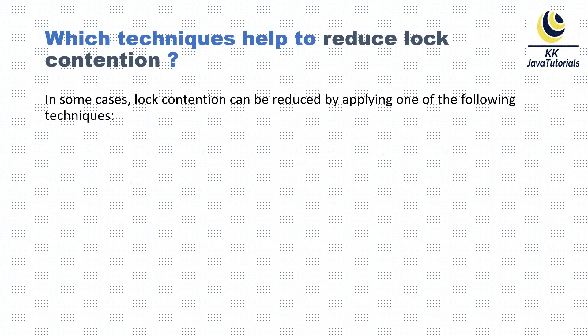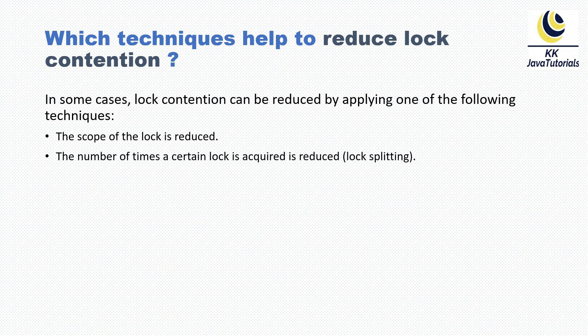Lock contention can be reduced by applying several techniques. First, the scope of the lock is reduced — instead of synchronizing the entire method, you can make use of a synchronized block. That way you reduce the time duration for the lock, and the lock will be released as soon as execution of the critical section is completed, allowing other threads to acquire the lock.